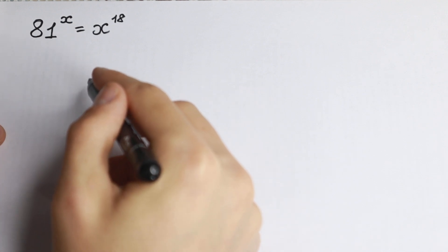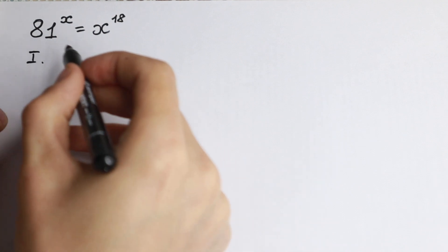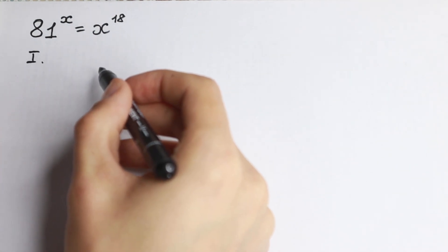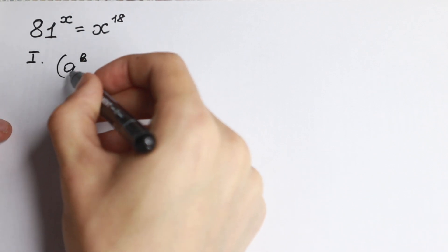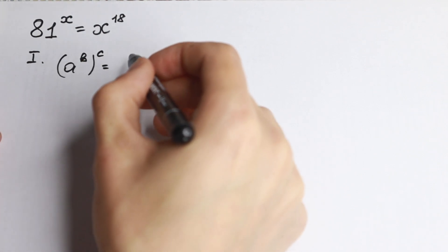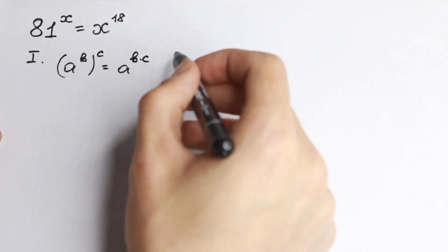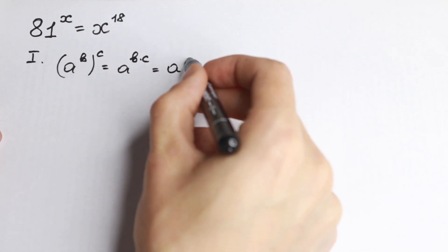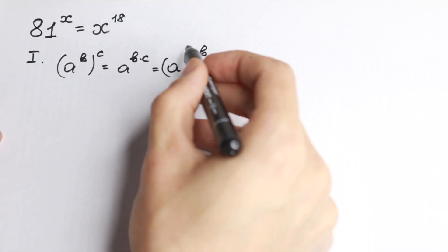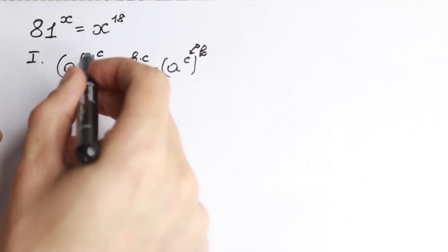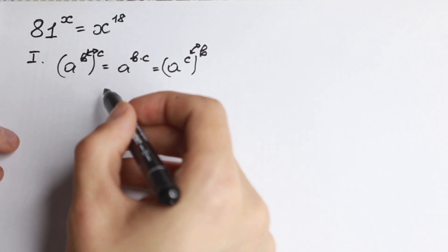I want to suggest two really good methods. The first method — take a look closely. We know the rule: if we have a to the power b, all raised to the power c, it is equal to a to the power b times c. Also, this is equal to a to the power c raised to the power b — the rule of interchange, so we can swap these powers. Let's use one of these rules in our case.